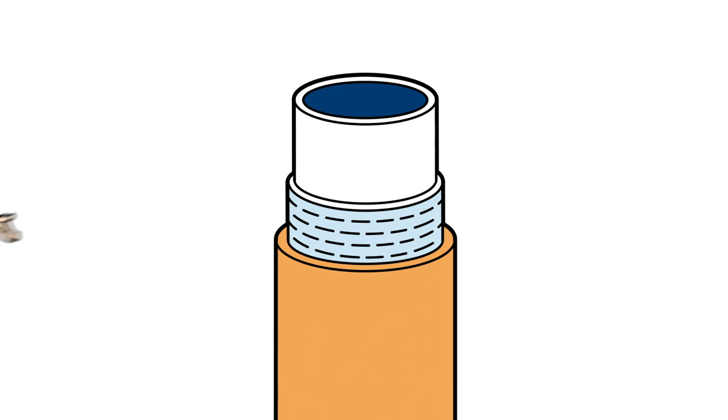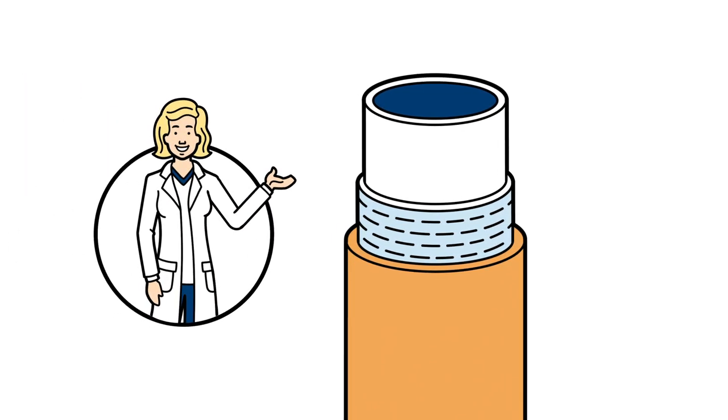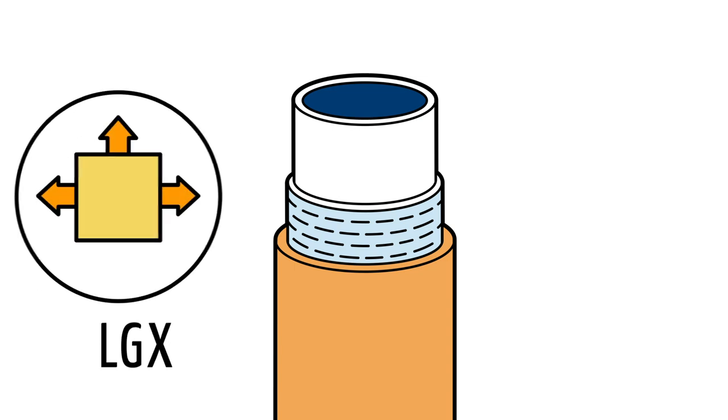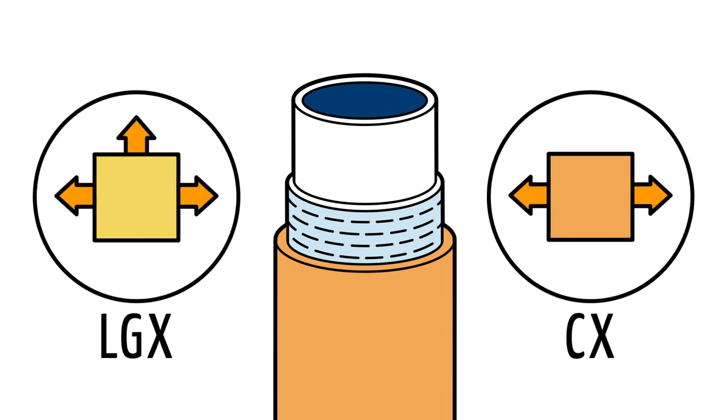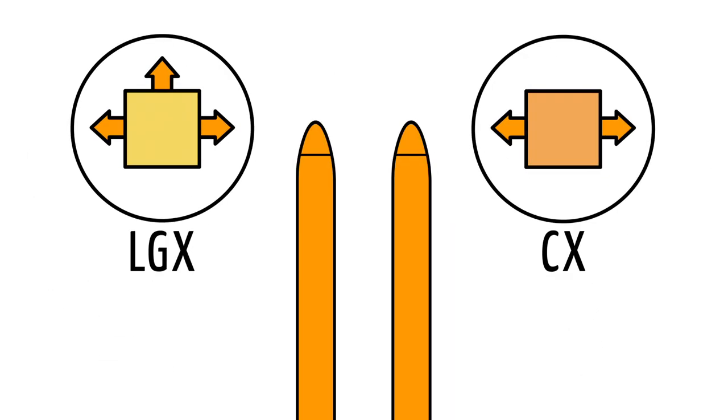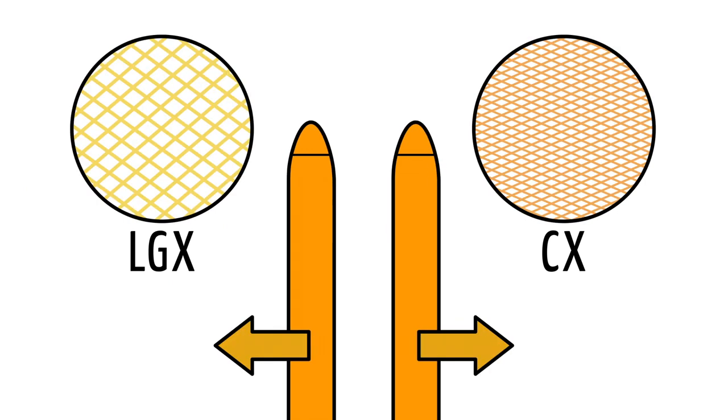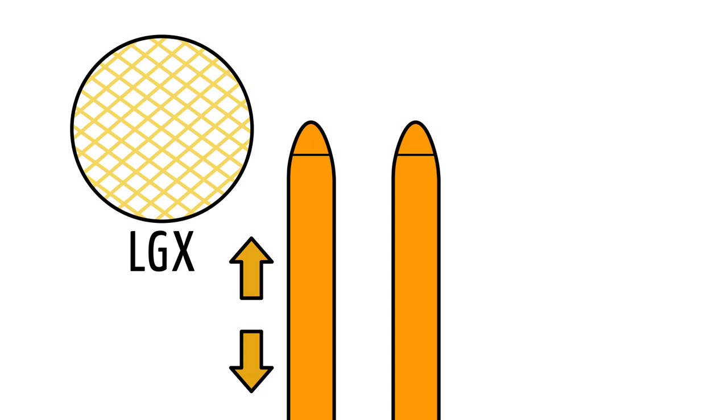That's not all. Dr. Harris states that the interior Dacron fabric layer differentiates the LGX from the CX. Both cylinders provide a controlled girth expansion, allowing for maximum rigidity, with the LGX cylinders able to expand lengthwise up to 25%.